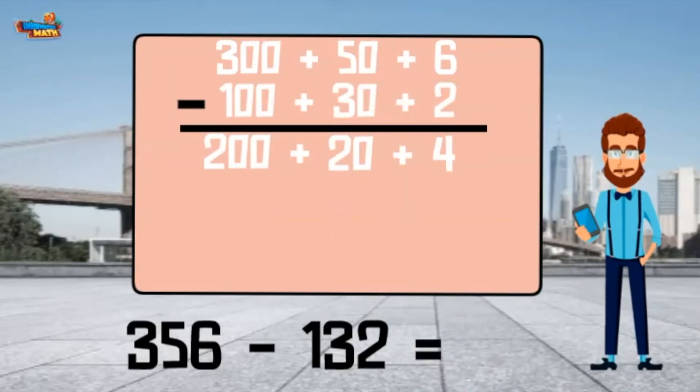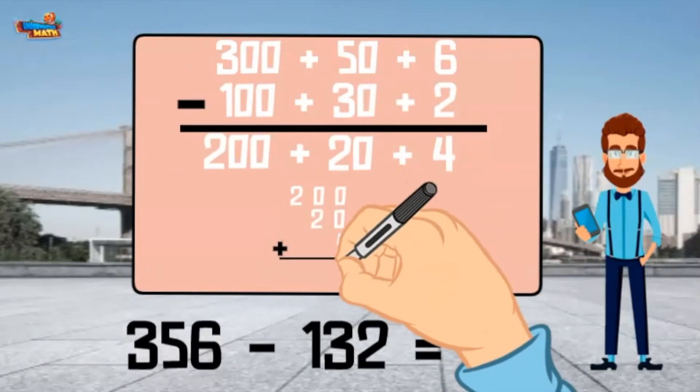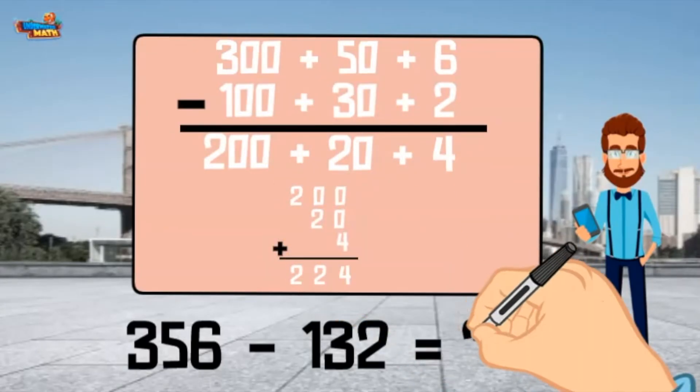Combine the differences in the bottom row to find the total difference. 356 minus 132 equals 224.